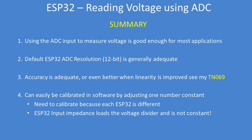Using the ADC input of the ESP32 allows you to measure voltages and is good enough for most applications. The default 12-bit ADC resolution (0 to 4095) is generally adequate. Accuracy can be made even more linear by adding some mathematics — see Technote 069 for details. It can easily be calibrated in software by adjusting a single constant number; for the 0 to 5 volt example that value is 5.9. Each ESP32 is different, so for an absolutely accurate answer you need to adjust the constant against an external meter.